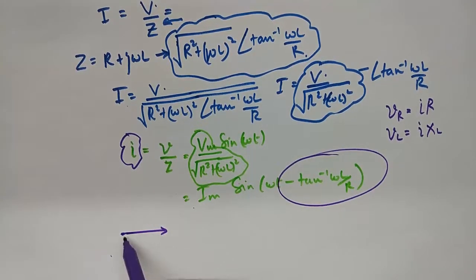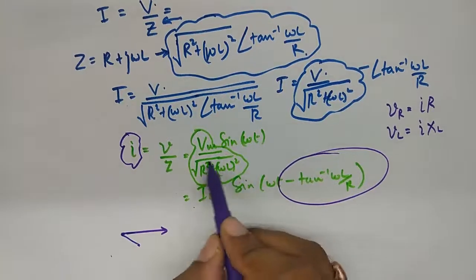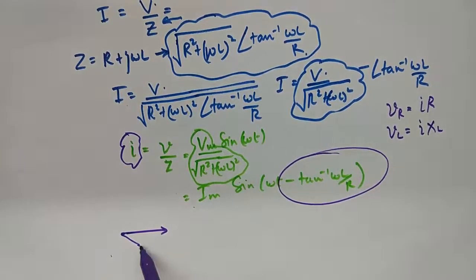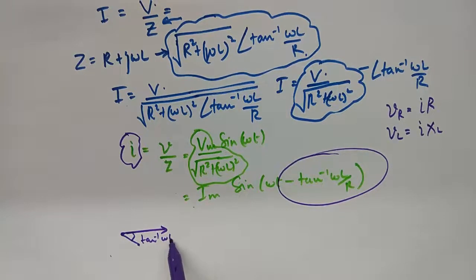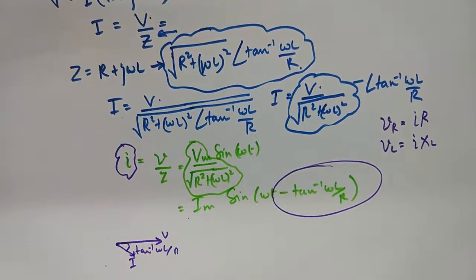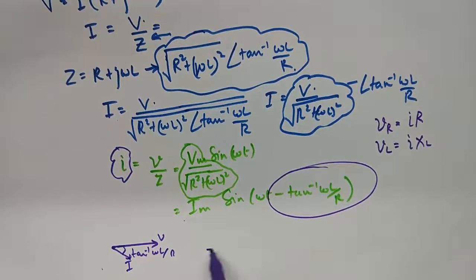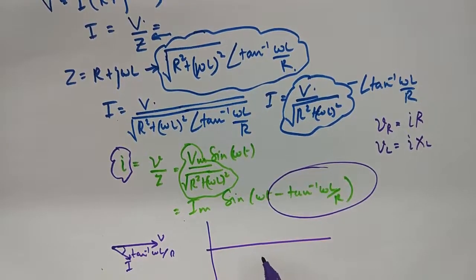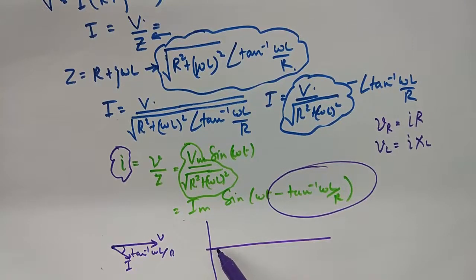So this is my I, this is my V, very simple. And if I was to make it in the form of waveforms, what I can say is my voltage is this.